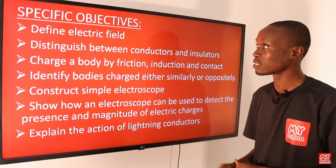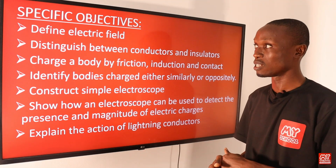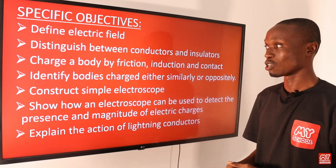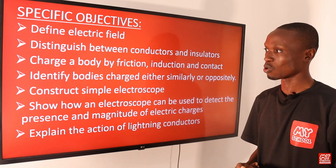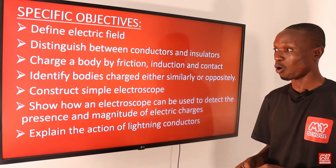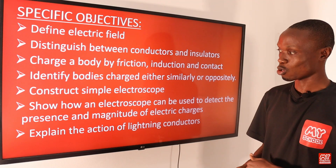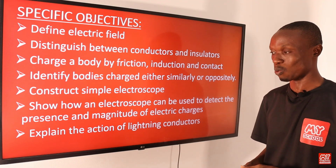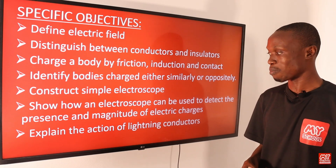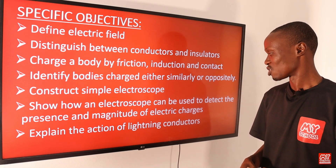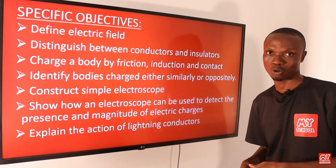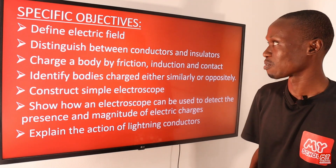Objective number one: at the end of this video we should be able to define Electric Field, distinguish between conductors and insulators, charge a body by friction, induction and contact, identify bodies charged either similarly or oppositely, construct a simple electroscope, show how an electroscope can be used to detect the presence and magnitude of electric charges, and lastly, explain the action of a lightning conductor.